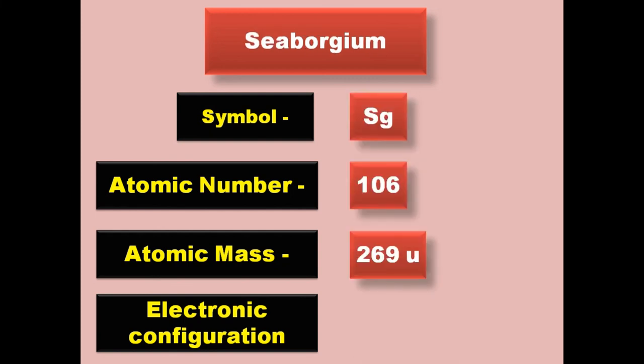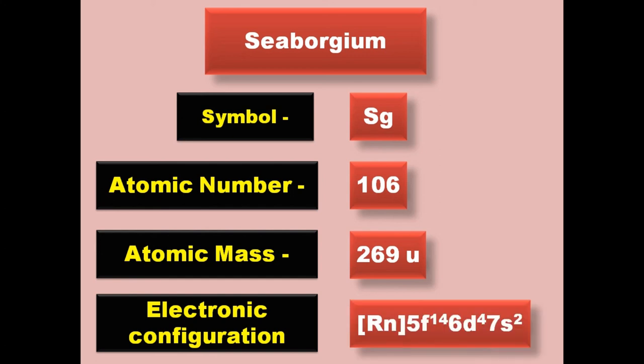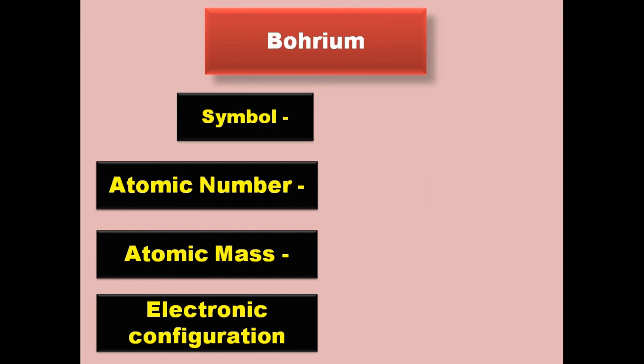Seaborgium has symbol Sg, atomic number 106, atomic mass 269, electronic configuration [Rn] 5f14 6d4 7s2. Seaborgium is a transition metal and exists in solid form at room temperature.